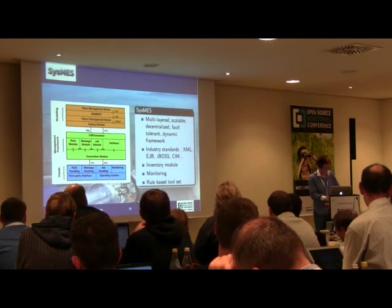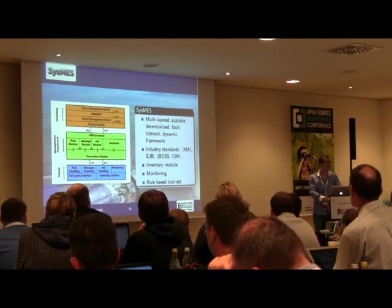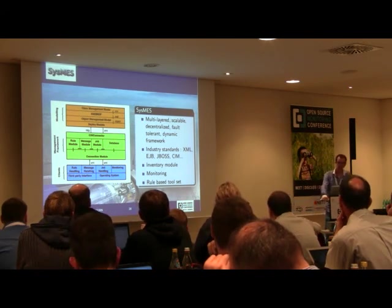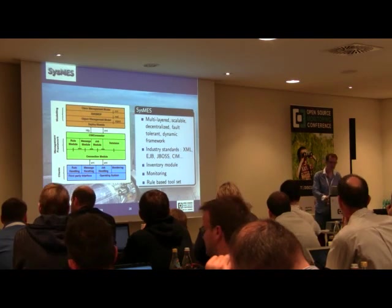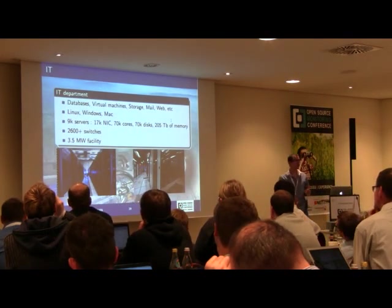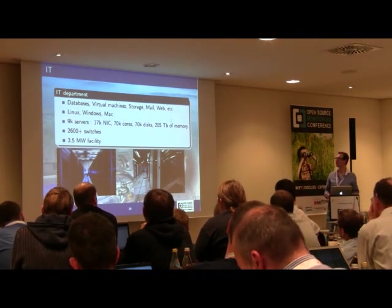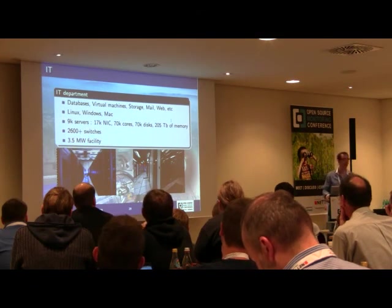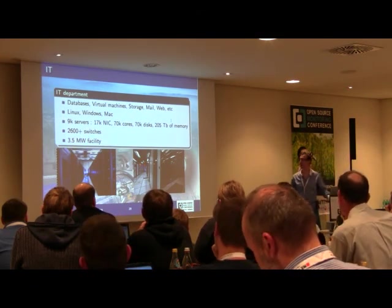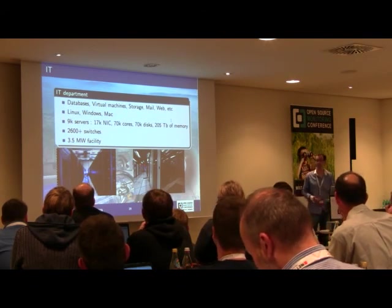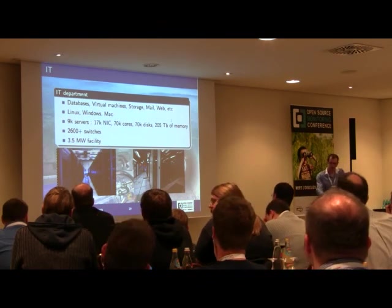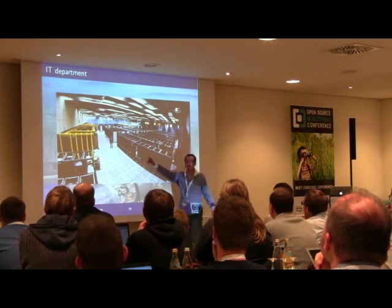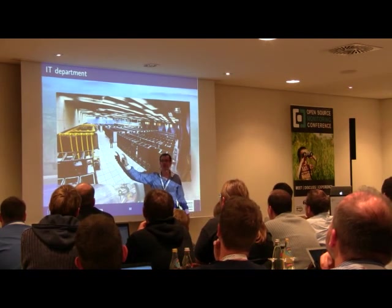We are now done with the experiments. The data analysis is done on the grid, which is primarily operated by the CERN IT department. This department also takes care of the IT center — the core infrastructure used by everyone at CERN: email, databases, web services. The environment is heterogeneous: several Linux flavors, Windows, and even Macs. In total, it's more than 9,000 servers and 2,600 switches — a 3.5 megawatt facility. Here in the CERN rack sits some of the main core internet routers, so all of you should hope this never burns down.